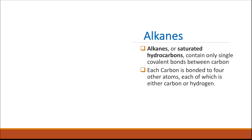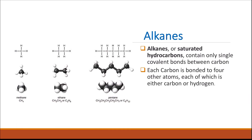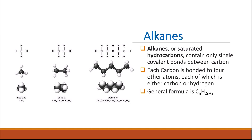Each carbon atom is bonded to four other atoms, each of which is either a carbon or a hydrogen. Examples of alkanes include methane, ethane, and pentane. The general formula of alkanes is CₙH₂ₙ₊₂.